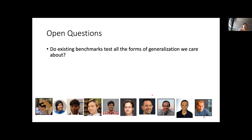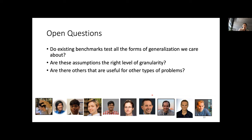To conclude, I'll end with some open questions. Do existing benchmarks test all the forms of generalization that we care about? I think the answer is no. Are these assumptions the right level of granularity, or are there others useful for other problem types? These are only a couple of possible assumptions we can make. There are surely others that are very interesting for robotics problems, and I'd love to see how we can leverage new and different assumptions for better generalization. Thank you very much — I'm happy to take any questions.